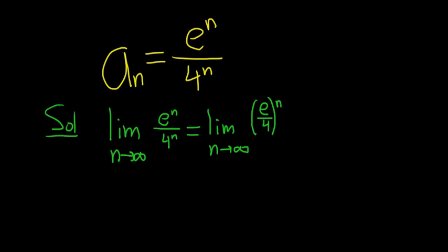Now we have to think about what e is. E is approximately 2.7, so e over 4 is less than, well, e is less than 3, let's say, and that's less than 1. So this here is a number and it's less than 1. That's the point.